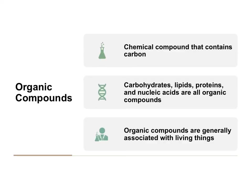A specific type of compound we're going to focus on in biology is called an organic compound. In science class, the word organic means we're talking about carbon — organic compounds are compounds that contain carbon. Some common organic compounds we'll look at are carbohydrates, lipids, proteins, and nucleic acids. We focus on organic compounds in biology because they are generally associated with living things, and almost every compound we look at in biology contains carbon.